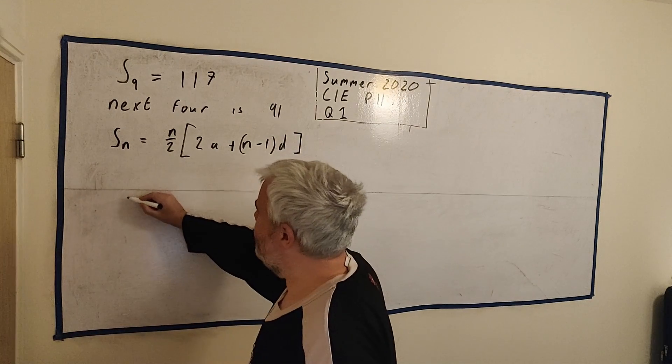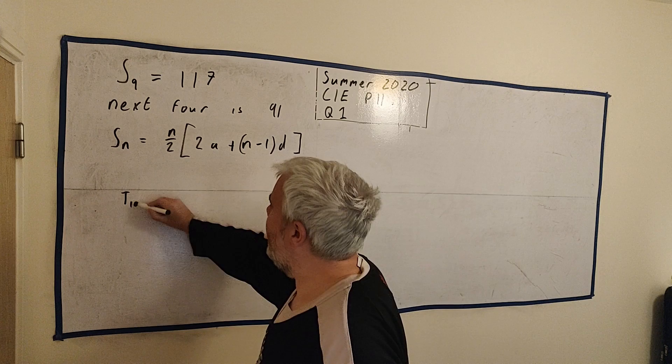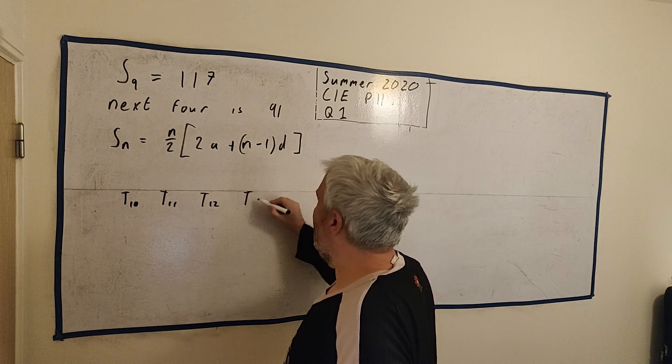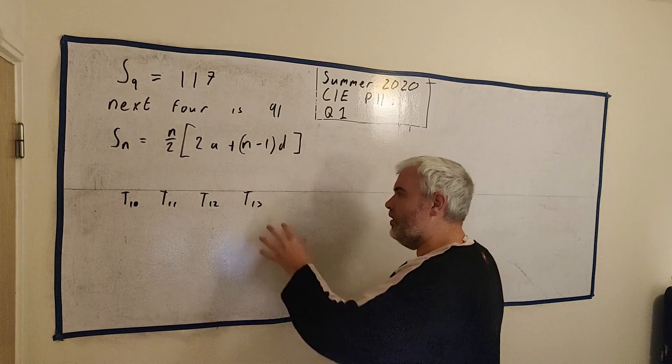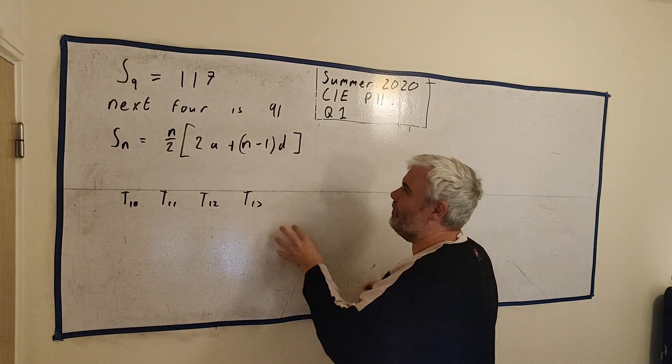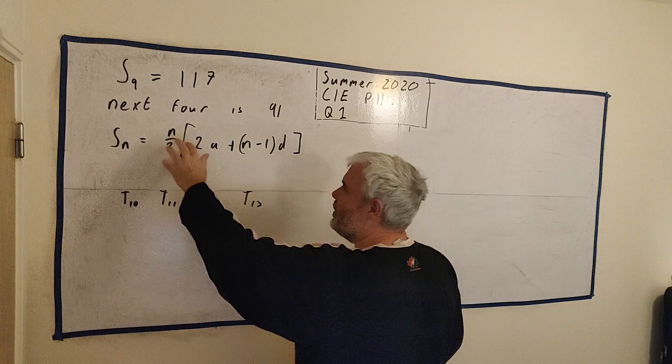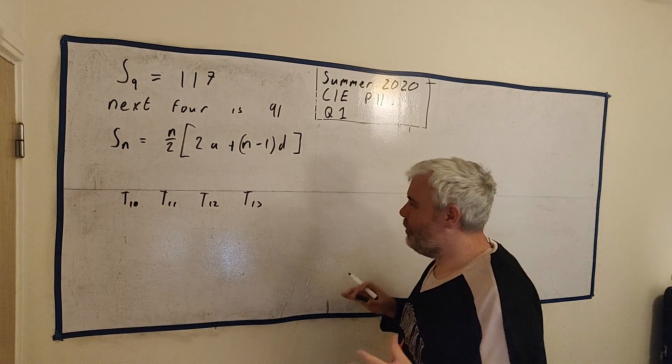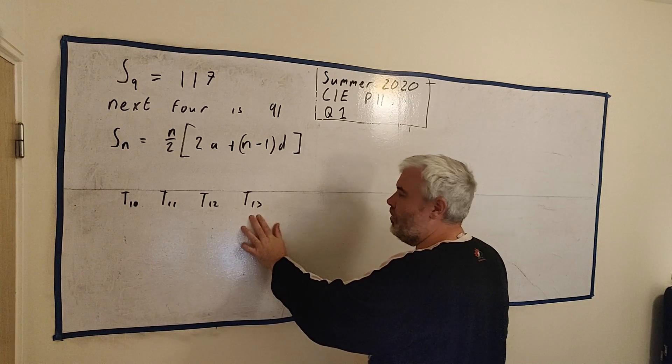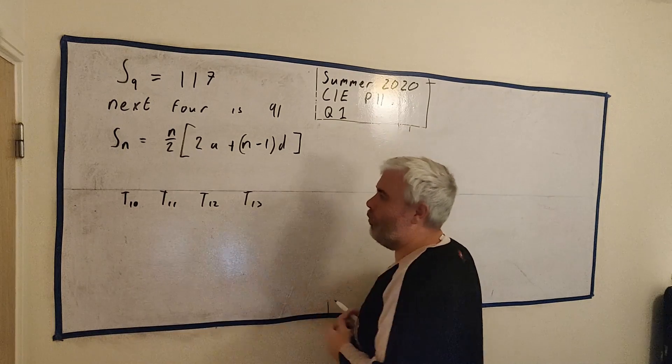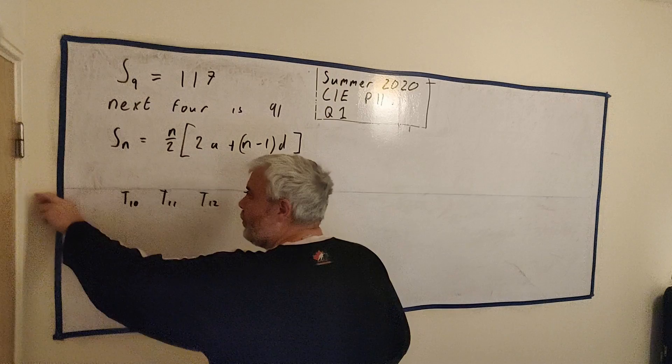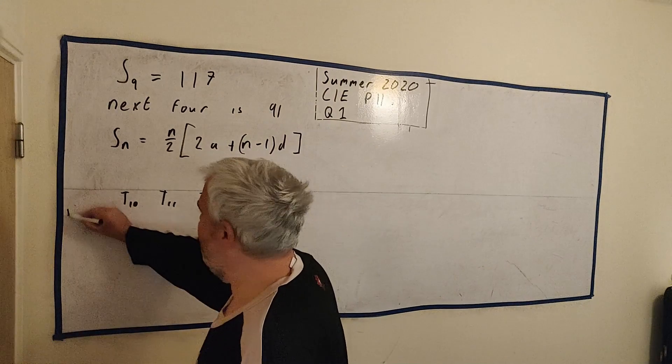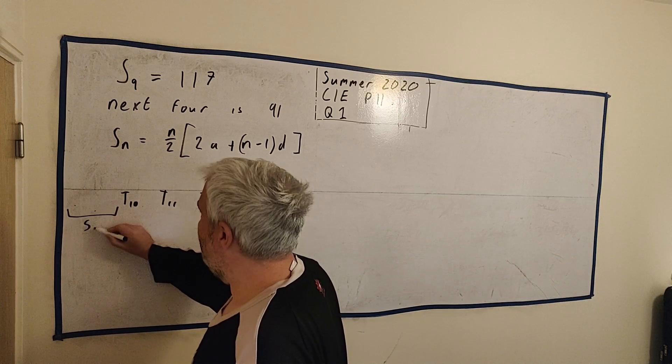So we need one more piece of information. So that's these next four terms. Let me write down what the next four terms are. We want t₁₀, t₁₁, t₁₂, and t₁₃. Now I find that useful because sometimes people say next four terms, they end up with the wrong number. So when it's a small number, I like to be real simple about it.